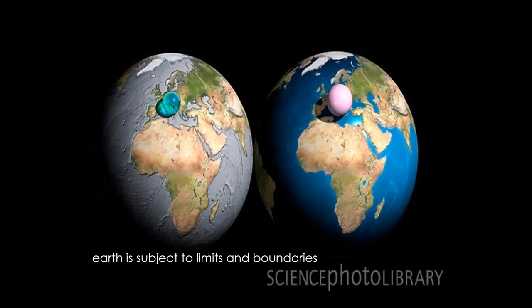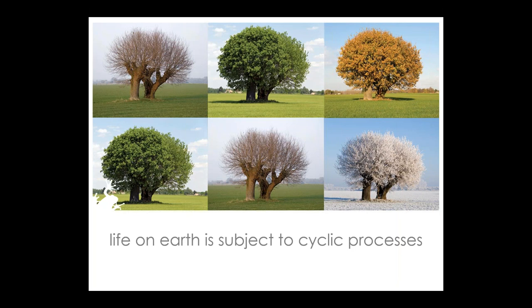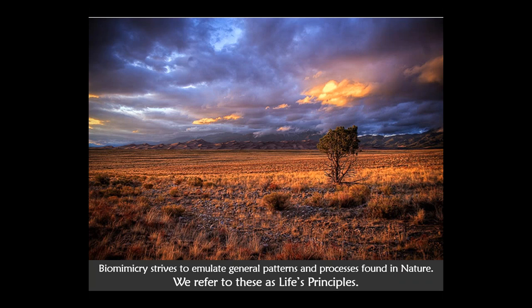Life on Earth is subject to limits and boundaries. The blue ball represents all the water on the planet and the pink ball all the atmosphere — these limits and boundaries act on a global scale but play out at many smaller scales. Ecosystems are often defined by the limits to which they are subjected, and we need to work within those limits. Finally, life on Earth is subject to cyclical processes, and organisms use the predictability of these cycles to survive. With changes in climate, these cyclical processes are changing — and that is one reason why we are losing so many species. In biomimicry, we refer to these general patterns and processes as life's principles.